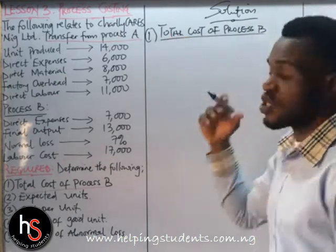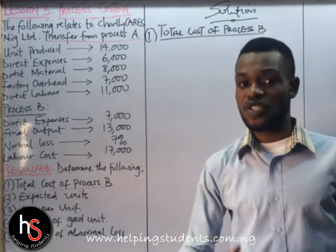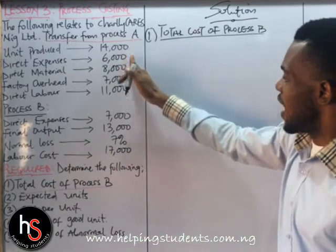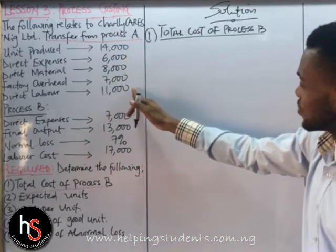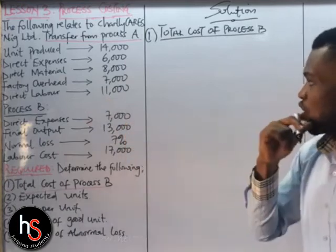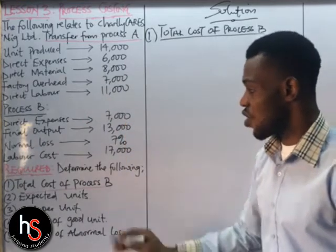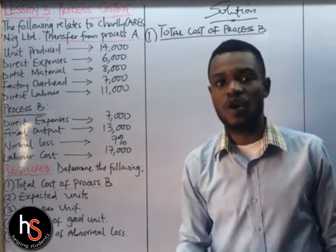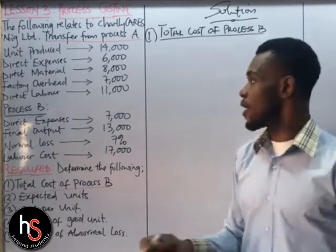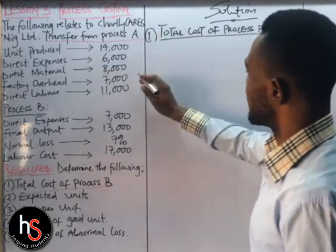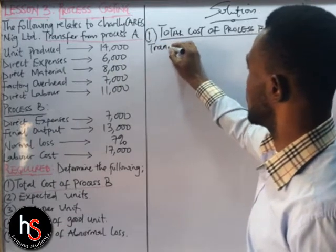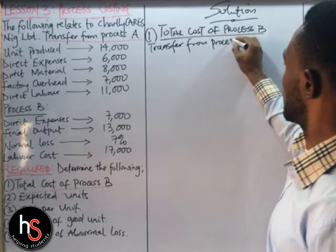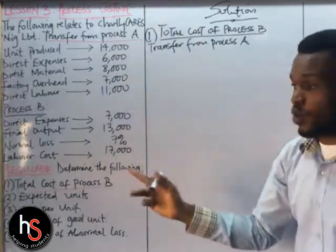You can't get the total cost of process B where you don't know what the total cost of process A is. Since they told us transfer from process A and gave us this account and process B, we are going to get our total cost. As I told us in the previous video, the total cost of production is actually the summation of all costs incurred. So total cost of production — we'll write transfer from process A, just as it is given to us in the question.